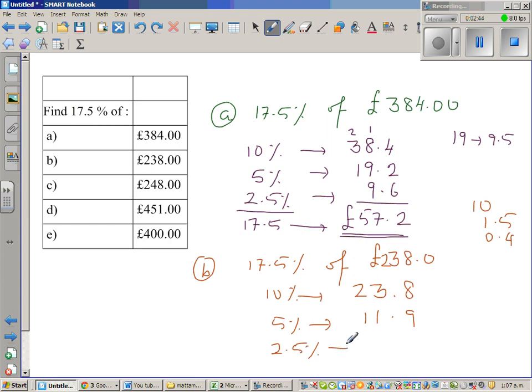And again half of 5%, which is 2.5 percent. So again half of 11 is 5.5 and half of 0.9 or 0.90 is 0.45. So this is 5.95.